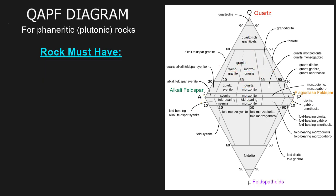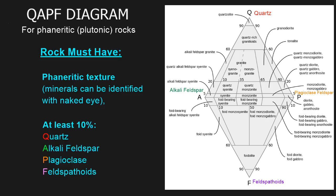There's a couple stipulations we need to outline before we know we can use this diagram. This is the diagram for phaneritic or plutonic rocks. The rock must have phaneritic texture, which means the minerals can be identified with the naked eye. It must also contain at least 10 percent quartz, alkali feldspar, plagioclase, or feldspathoids.